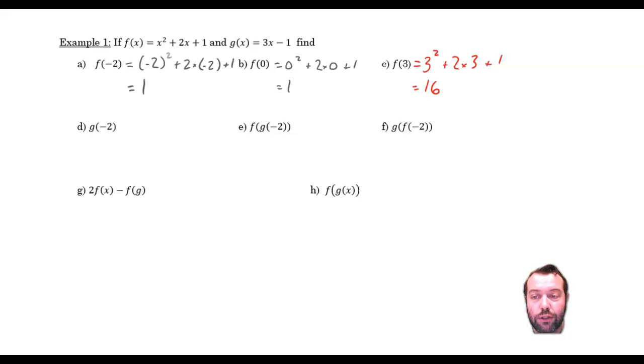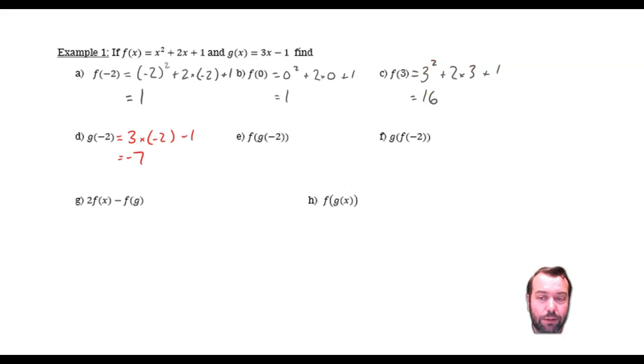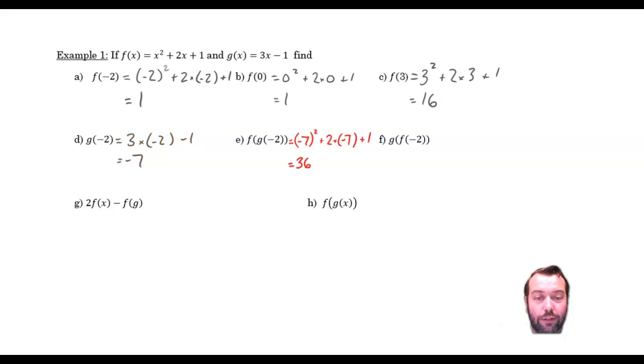Now, I've got the g of x being a different function. The g of negative 2. Substitute negative 2 in there. And I get, in this case, negative 7. Now, what I'm asking for is the function of the g of negative 2. Well, we know the g of negative 2 is negative 7. Using these fairly standard order of operations, we'll do the inner brackets first. So, the g of negative 2 is negative 7. And then we want to do the function of negative 7. So, that's negative 7 squared plus 2 times negative 7 plus 1 gives us 36.